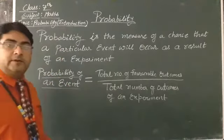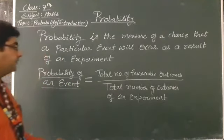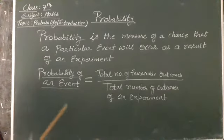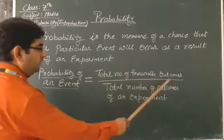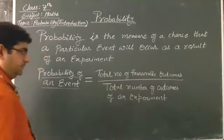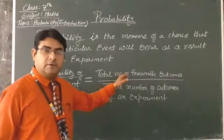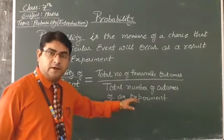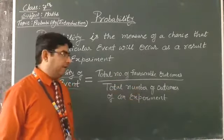So how can you find the probability? You can find probability by a simple formula. Probability of an event equals total number of favorable outcomes upon total number of outcomes of an experiment. That means favorable outcome upon total number of outcomes or cases.